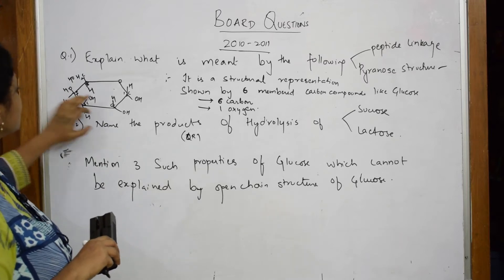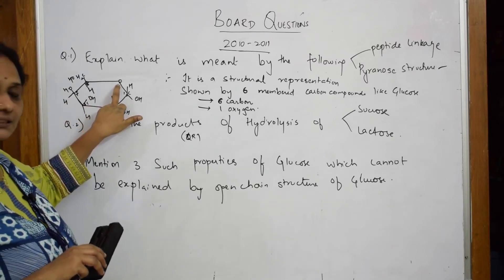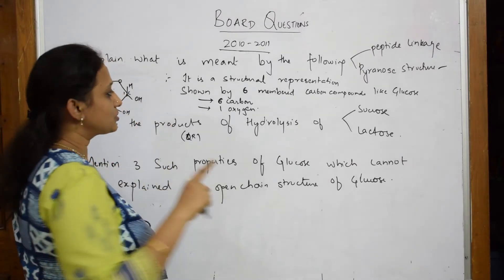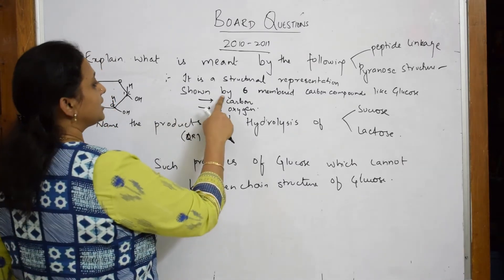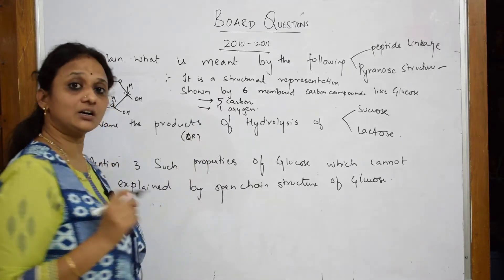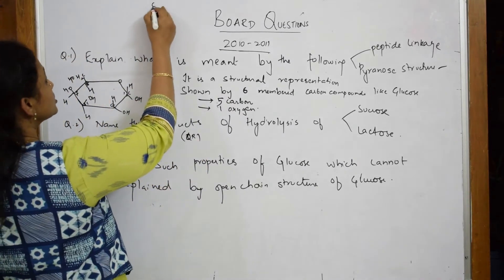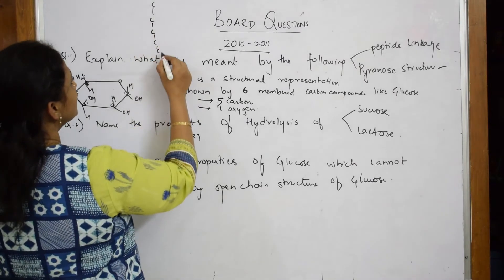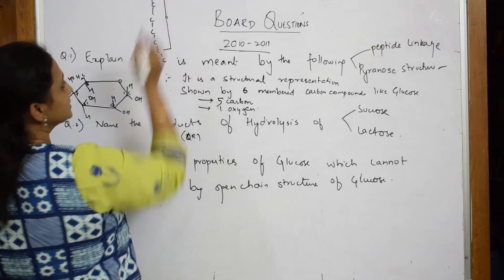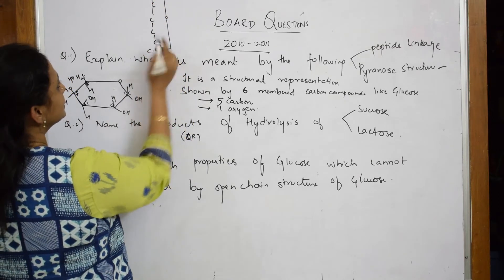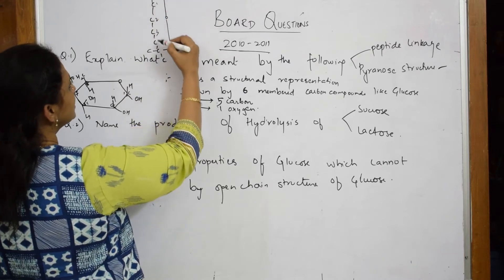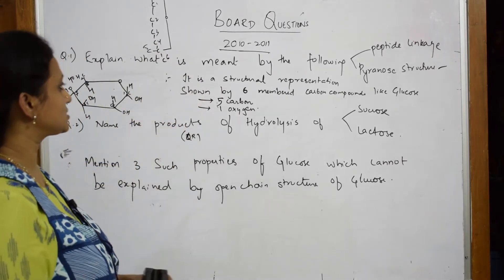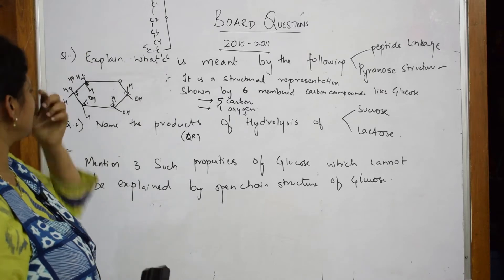In the pyranose structure, a cyclic ring is formed with the fifth carbon. So you count only five carbons inside the ring, because in glucose the fifth carbon forms a cyclic structure. That condensed ring has five carbons and one oxygen. Write this structure — five carbons and one oxygen — and finish off this question.